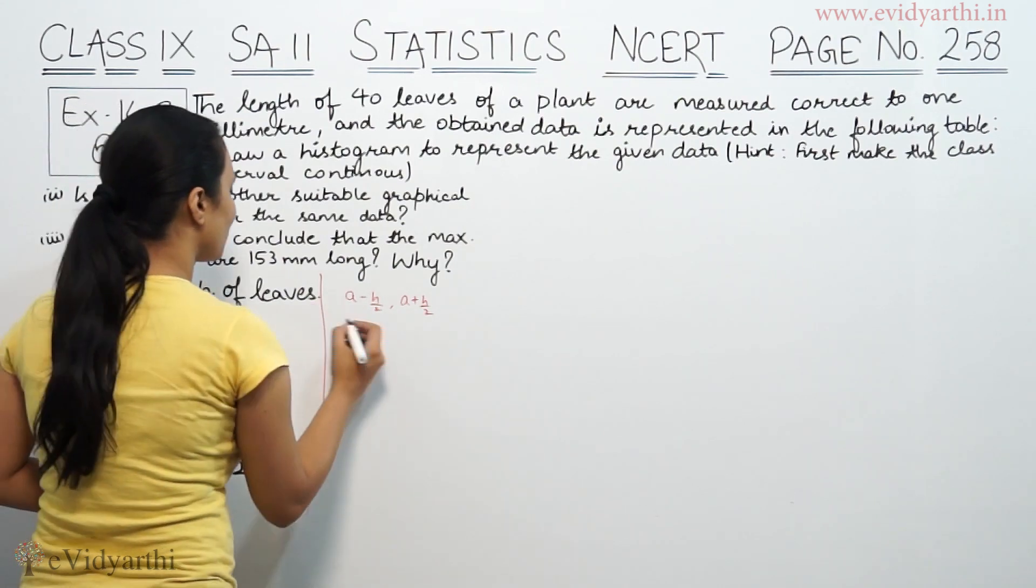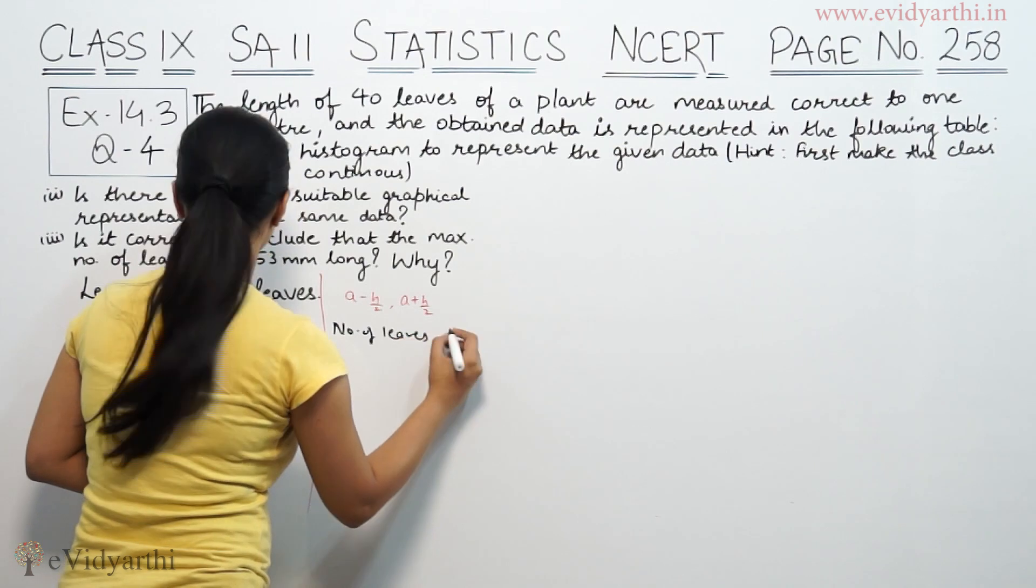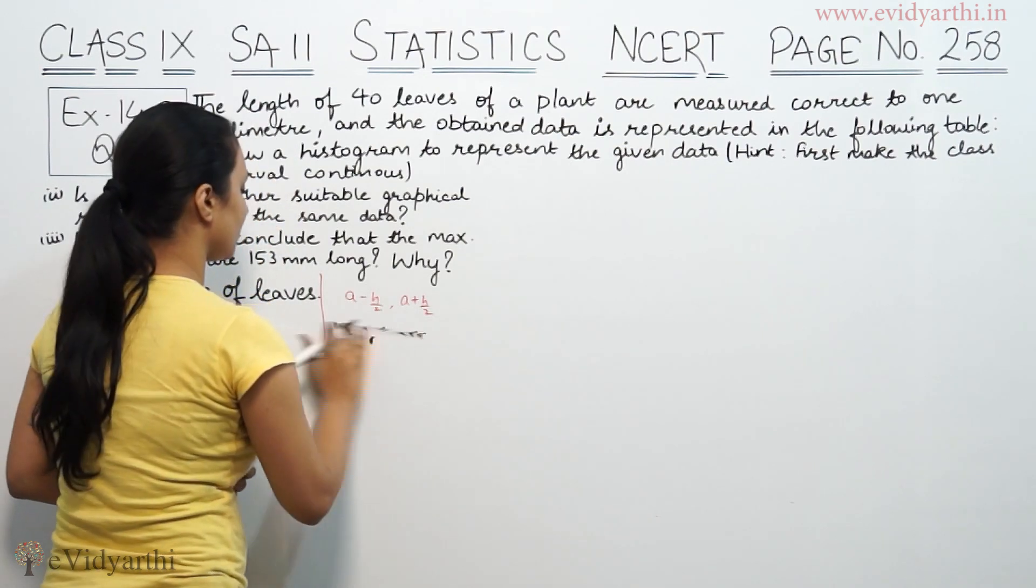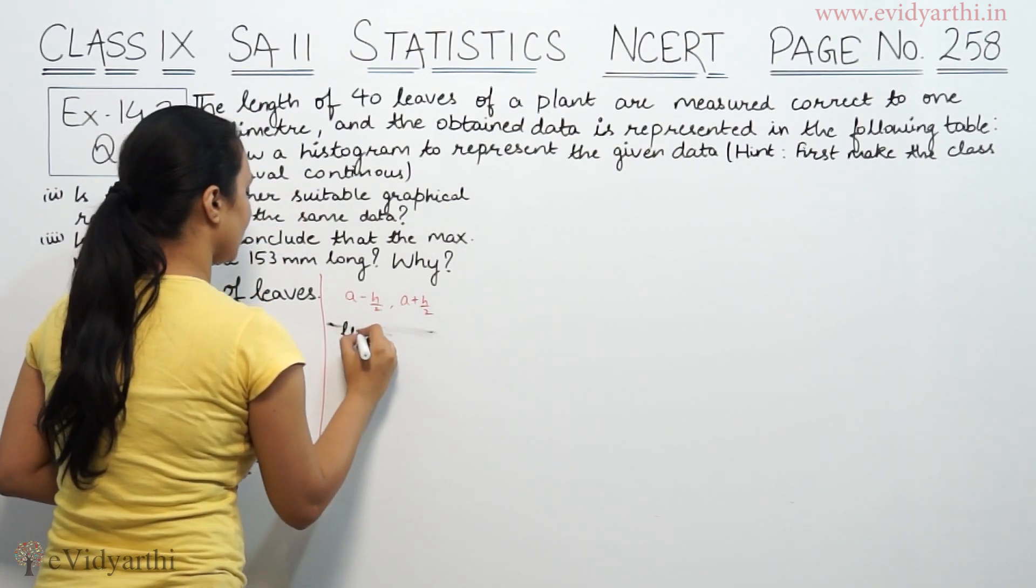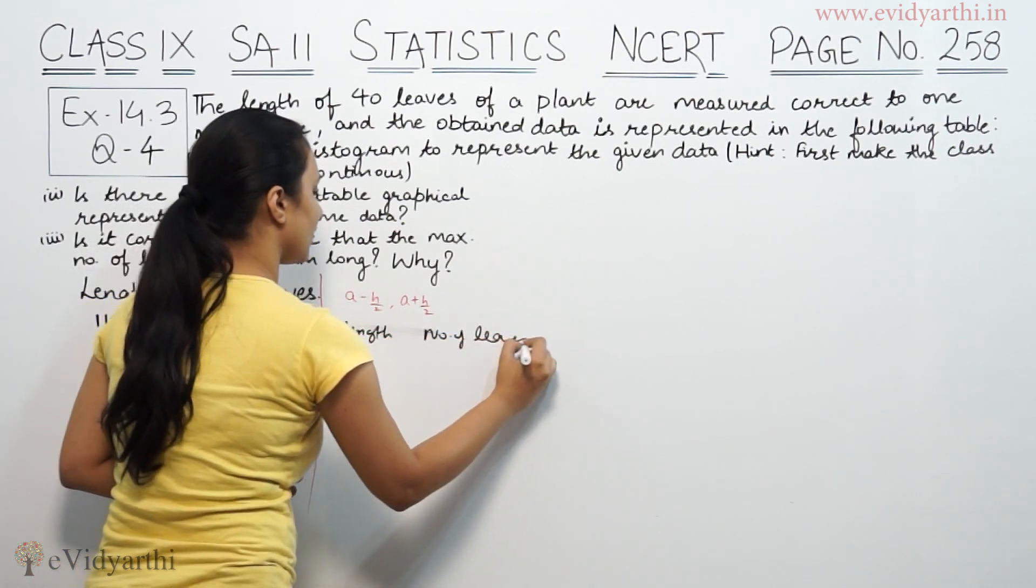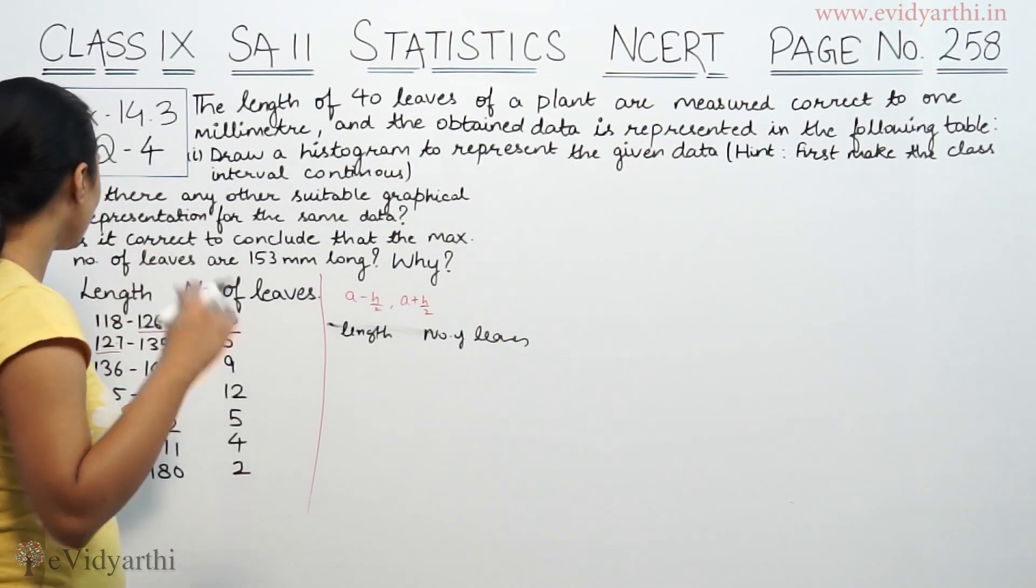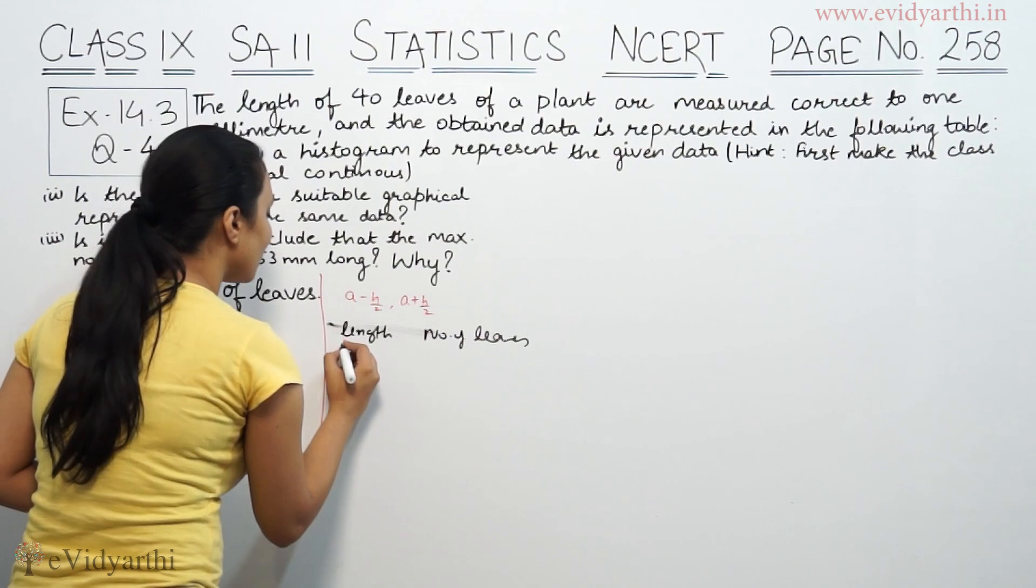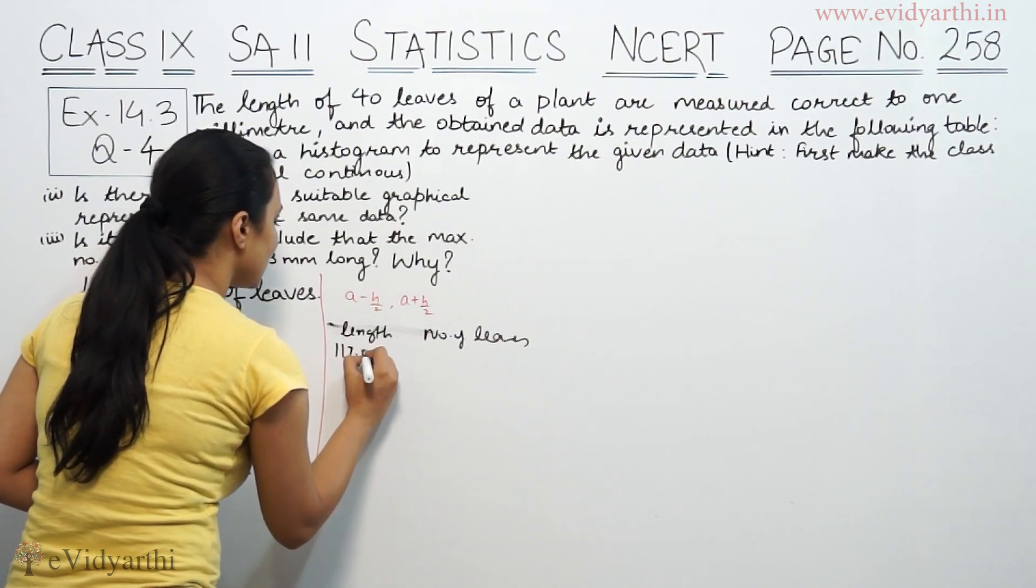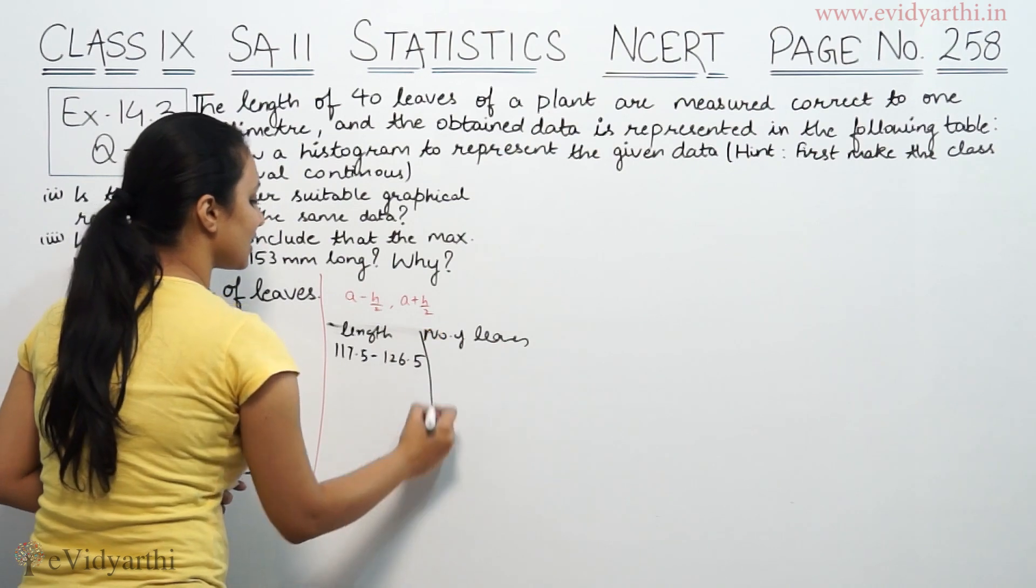We write length and number of leaves. For length, we subtract 0.5 because the width is 1. So 118 minus 0.5 is 117.5, and 126 plus 0.5 is 126.5.